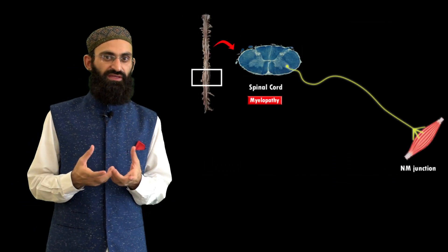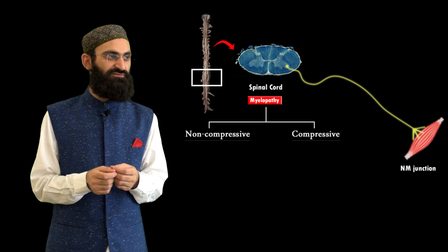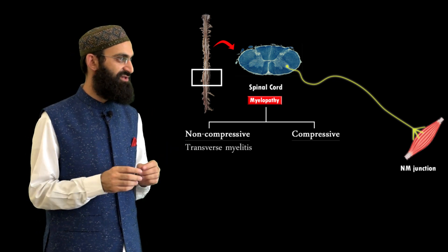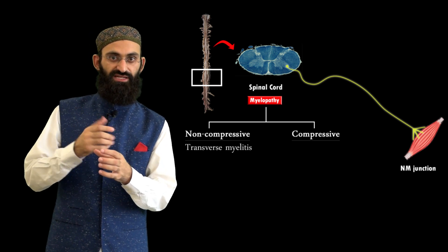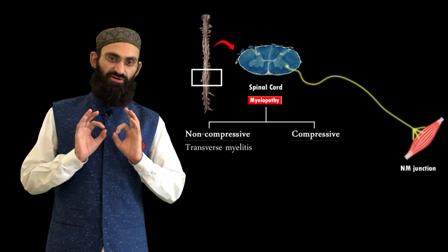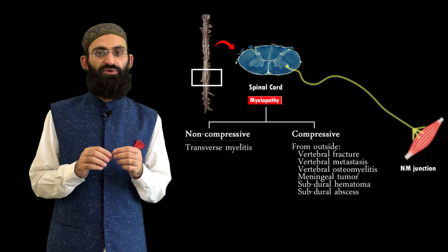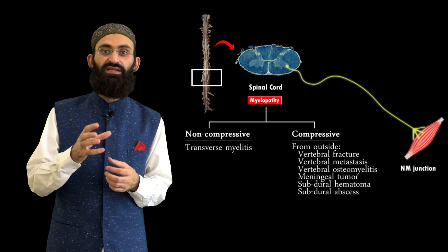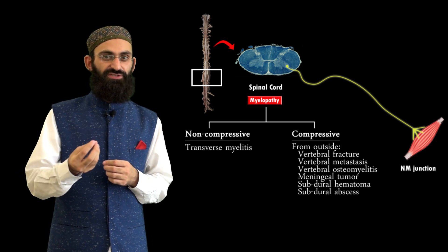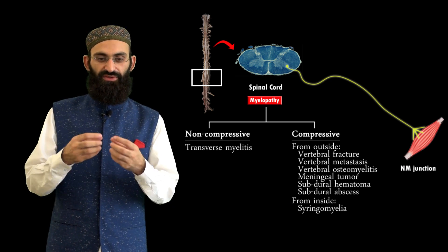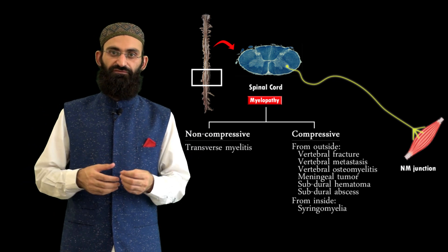Myelopathy is broadly categorized into non-compressive and compressive. An example of non-compressive myelopathy is transverse myelitis, which has many causes. Compressive myelopathy results from compression of the spinal cord from outside — such as vertebral compression fractures, vertebral metastasis, vertebral osteomyelitis, meningeal tumors, subdural hematoma, or subdural abscess — or from within, for example syringomyelia, where cavity formation causes compression of different tracts in the spinal cord.